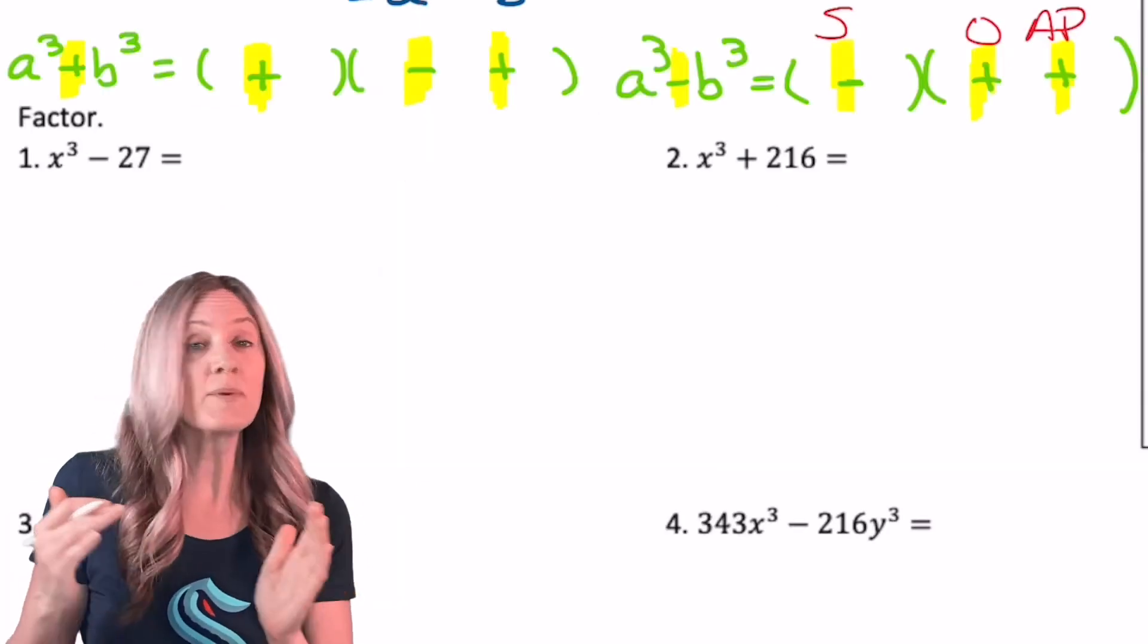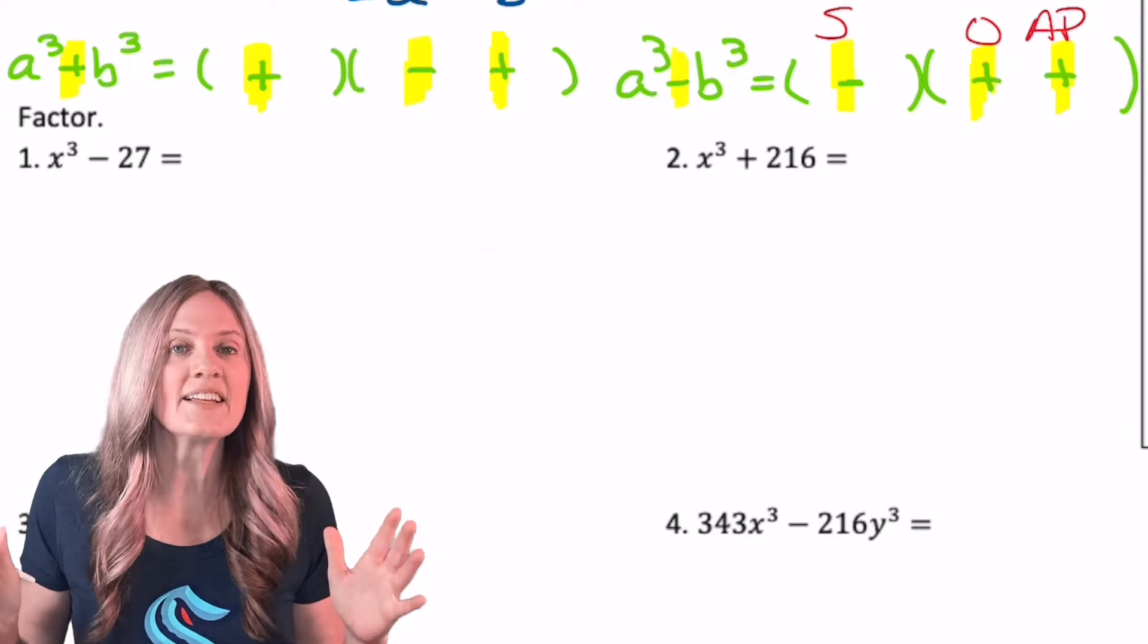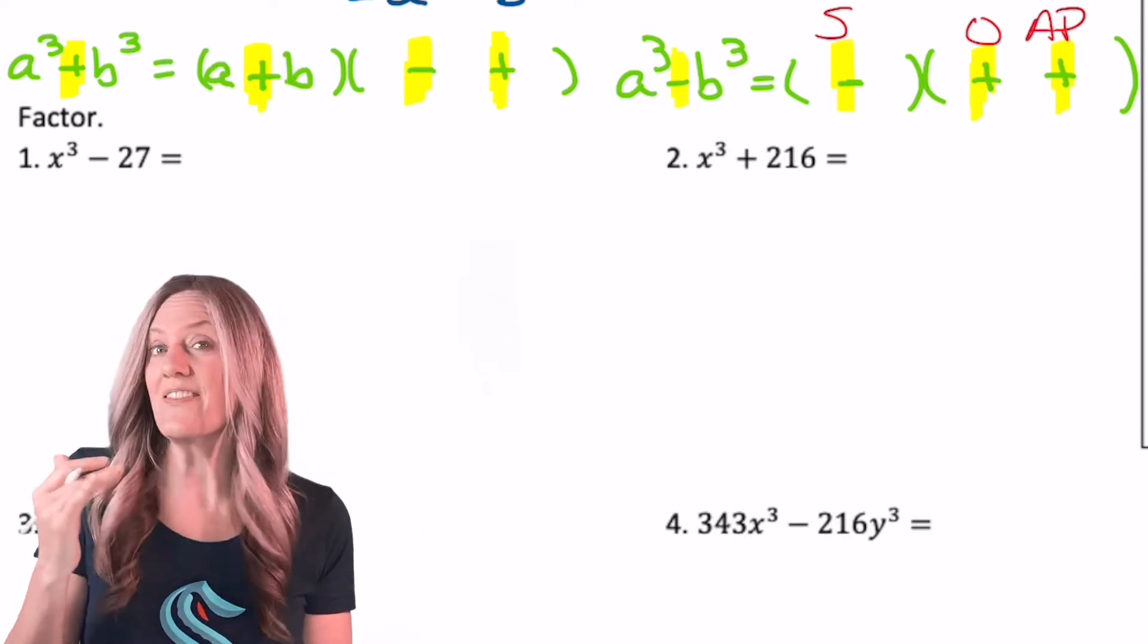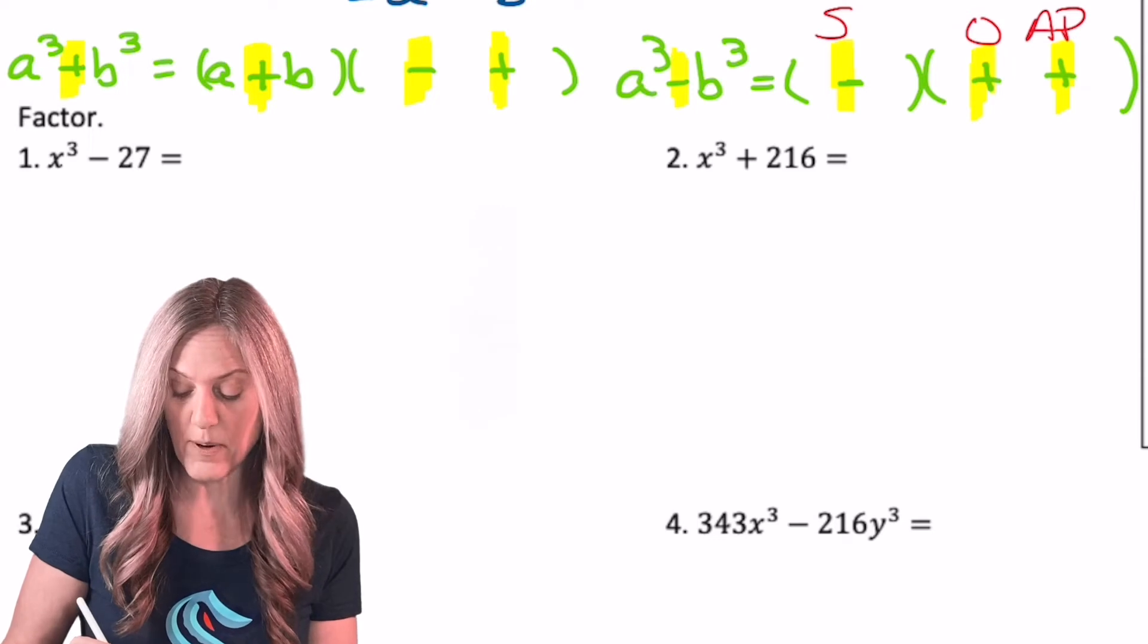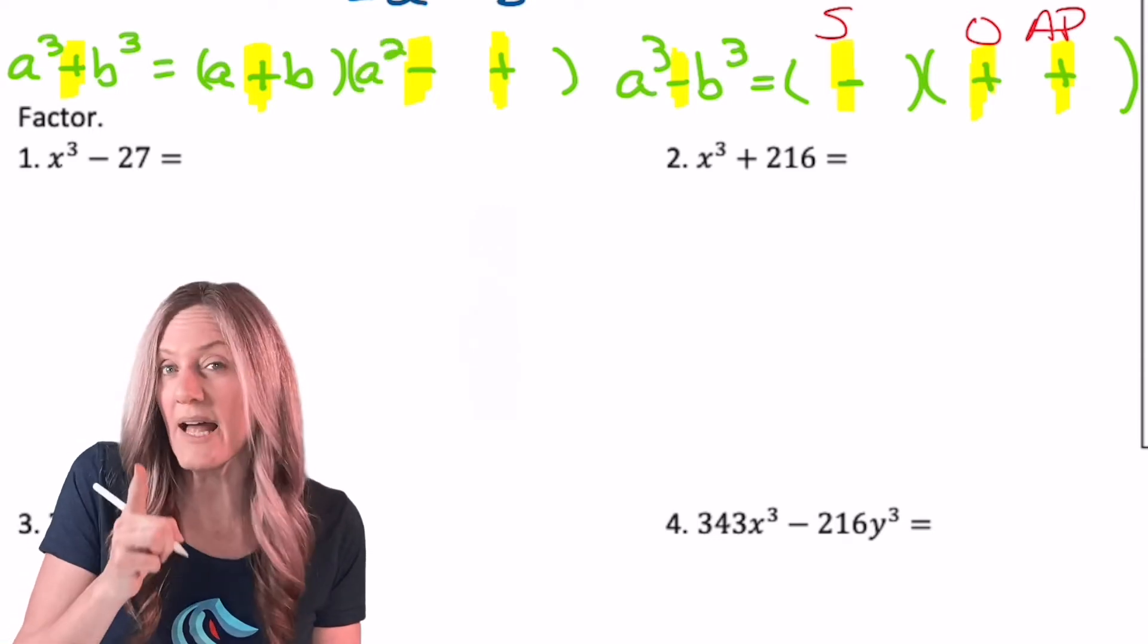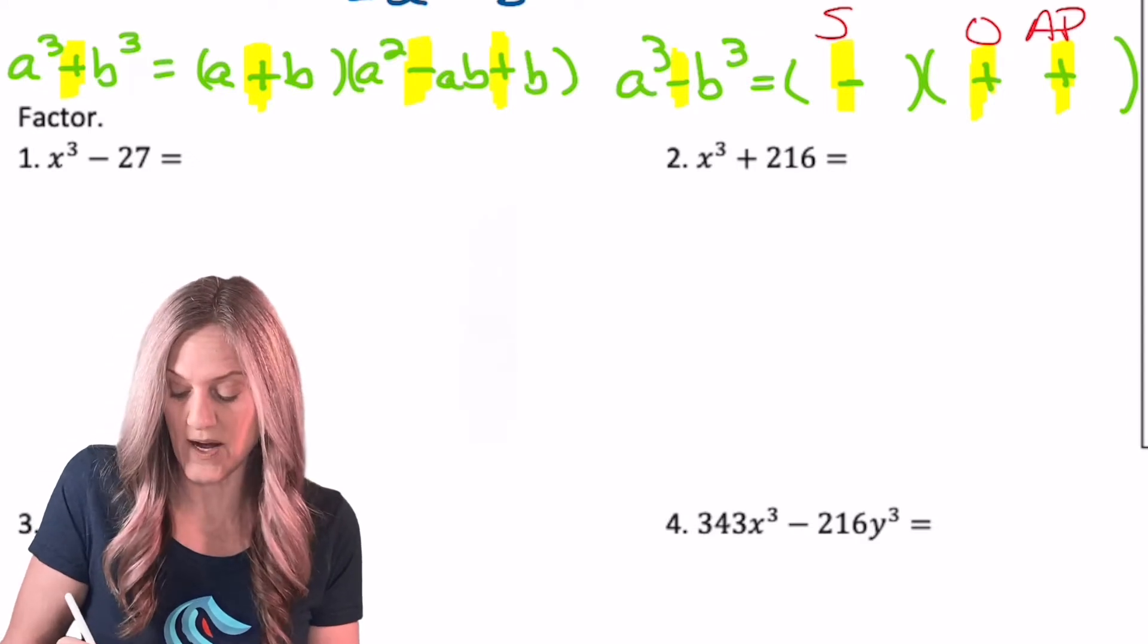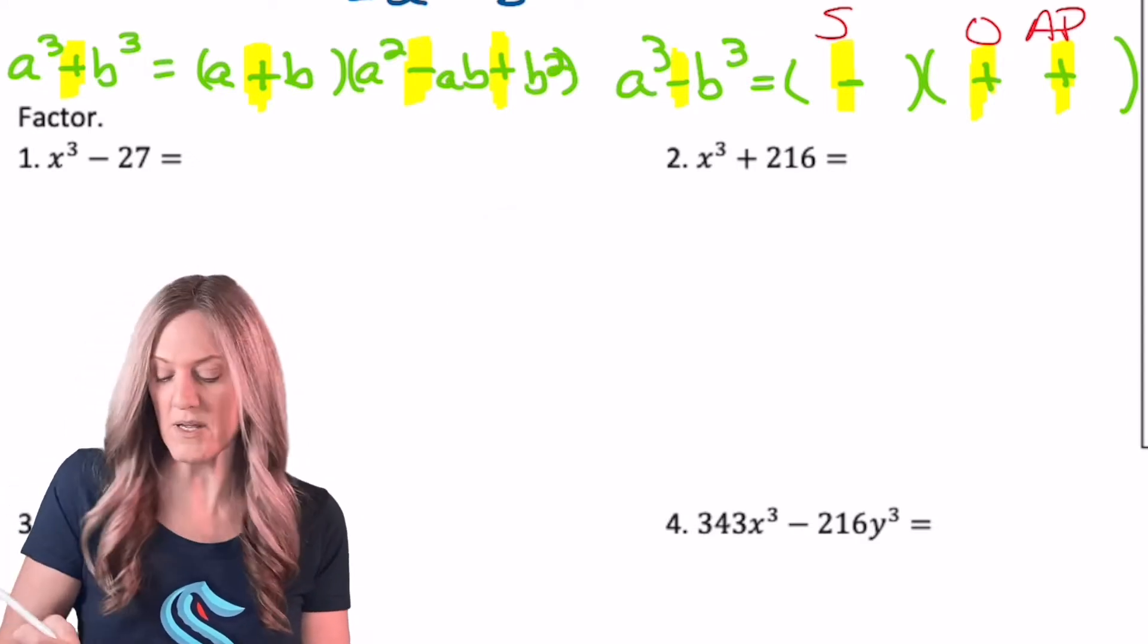Once we have the binomial and trinomial, and we set up the signs, then let's do the pattern. So I have a and b, and then to get the trinomial, I take the first part squared, I multiply together a times b, and the last part squared, b squared.